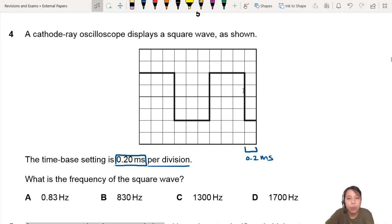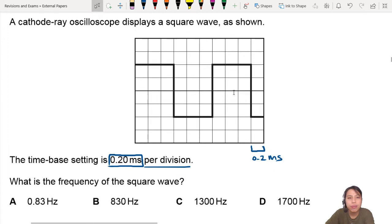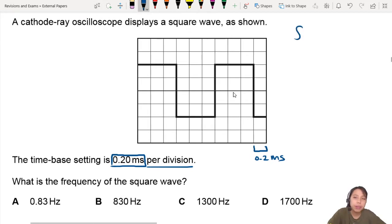What is the frequency of the square wave? So to find frequency, you need to know that frequency is 1 divided by the period of oscillation. So we need to find the period, one complete cycle.